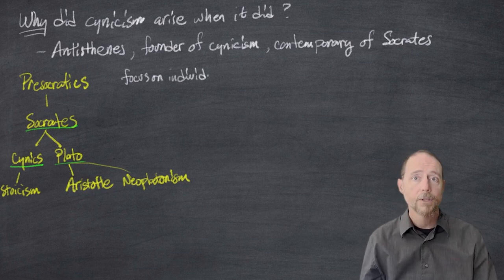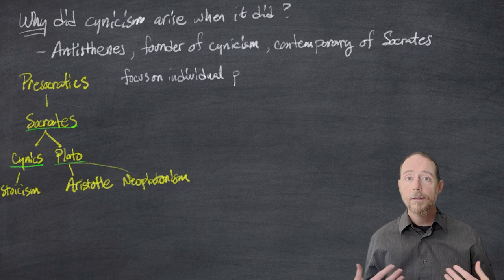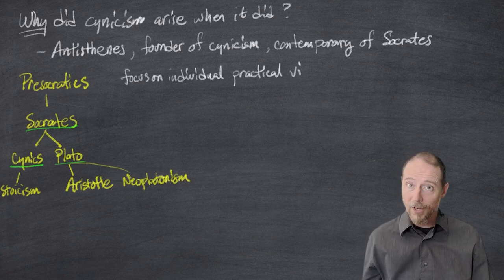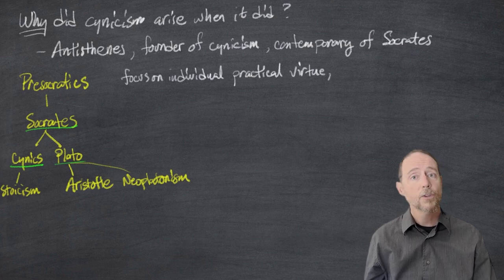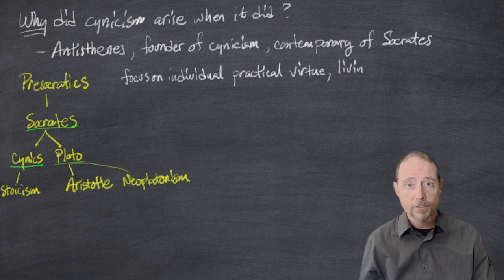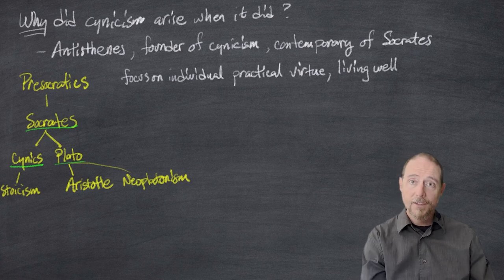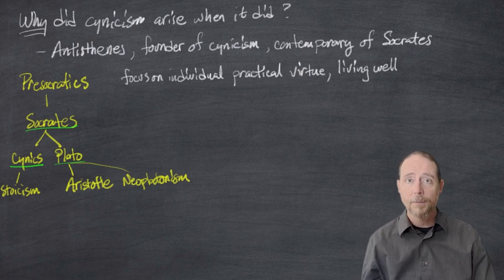Epictetus' Enchiridion, for instance, and we'll discuss that at length, was a good example of cynic thought to a large extent. Stoicism is, to a large extent, an inheritor of the cynic tradition, tracing back to the side of Socrates that was not embraced by Plato.